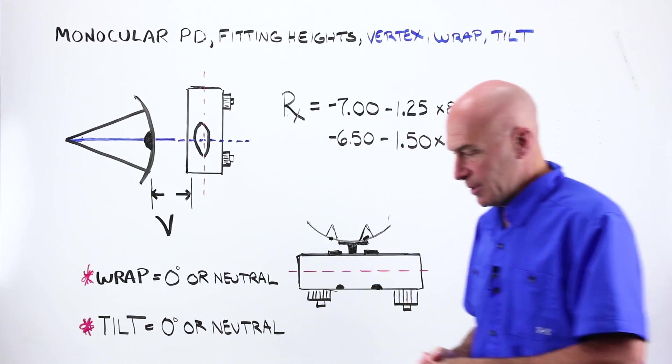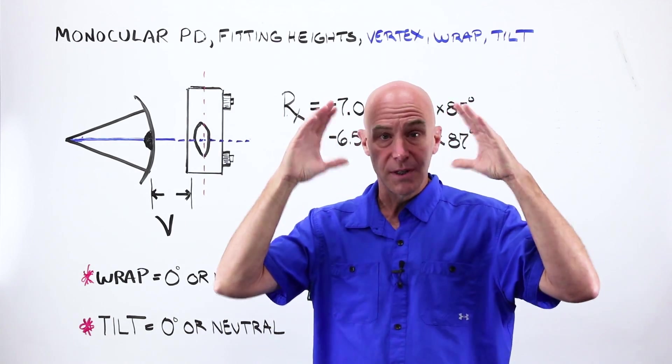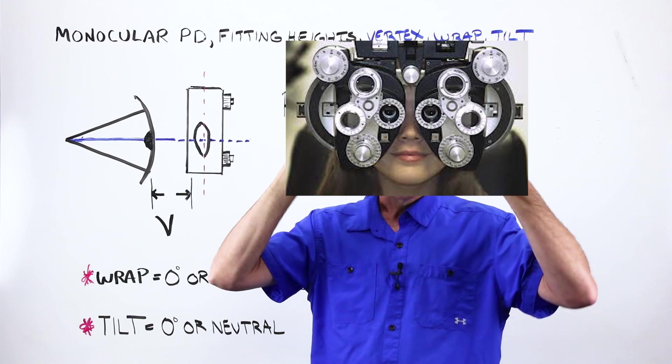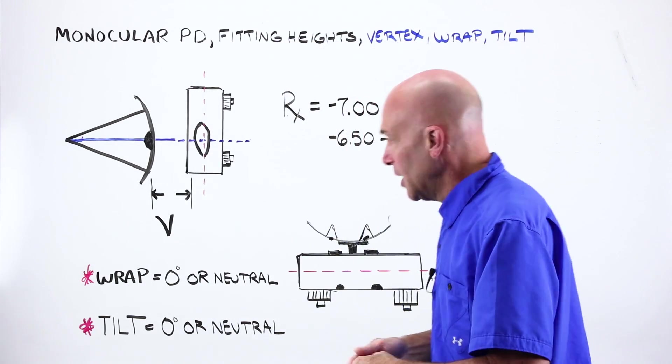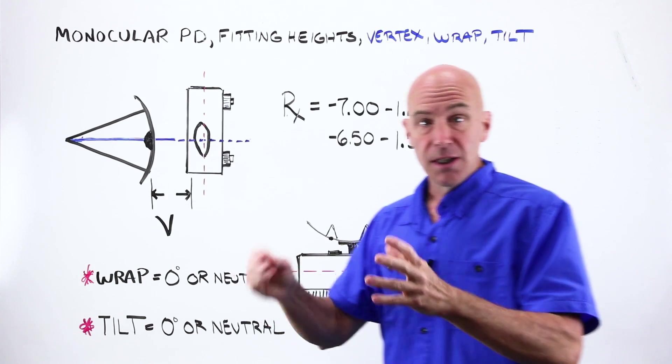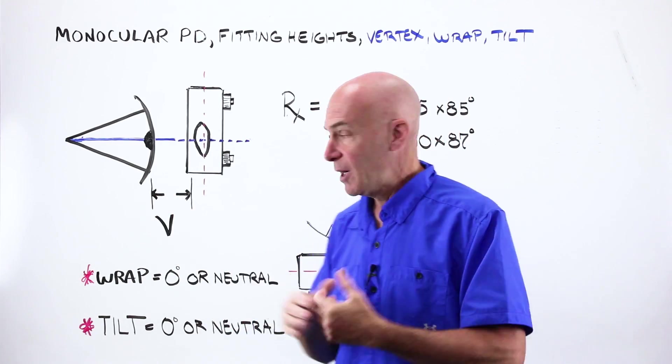It's a phoropter. It's that tool that a doc or a practitioner uses. They put that thing in front of your face, there's a picture of it, and they dial and they switch and they throw levers and you hear the little sounds and you're looking at the big A and the little E and you say, yes, one is better, two is better.